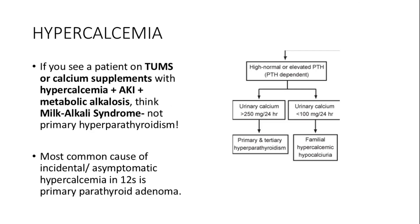Hypercalcemia, especially when associated with AKI and metabolic alkalosis, may indicate milk-alkali syndrome, which can be caused by OTC medications for acid reflux rather than primary hyperparathyroidism. The first step in evaluation of hypercalcemia is checking PTH levels. If elevated or normal, it is PTH-dependent.